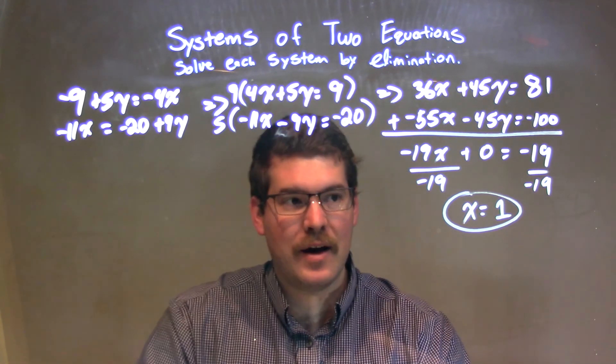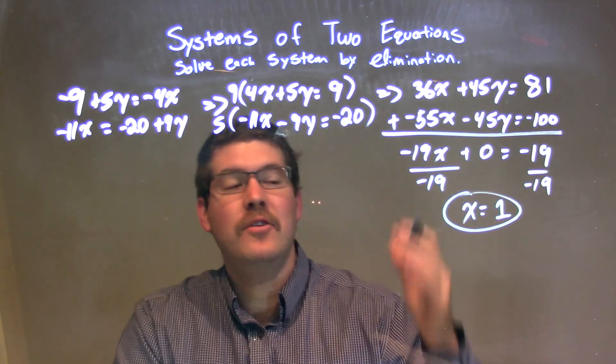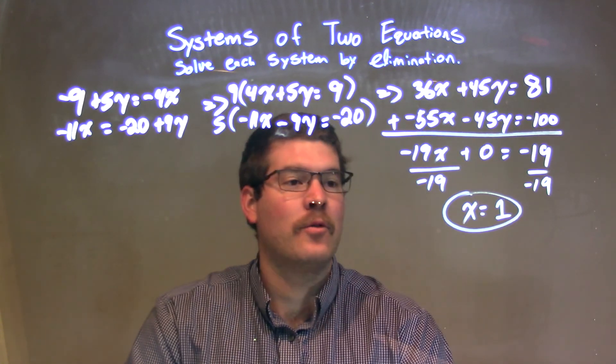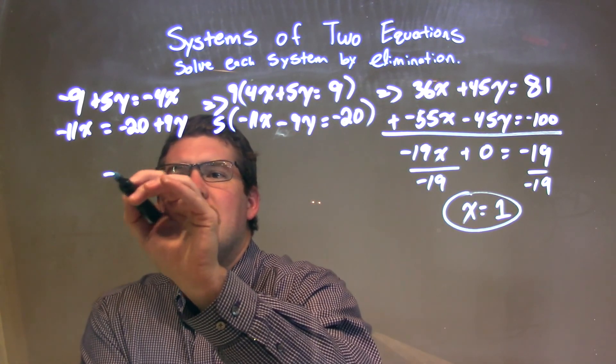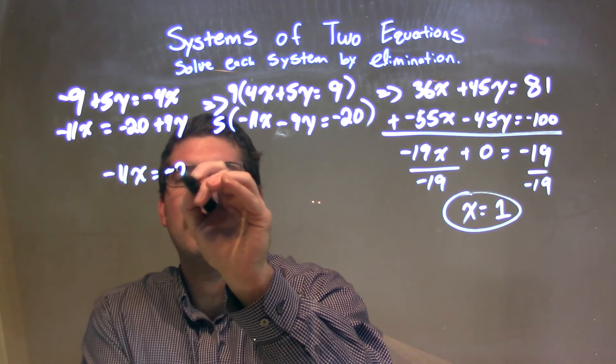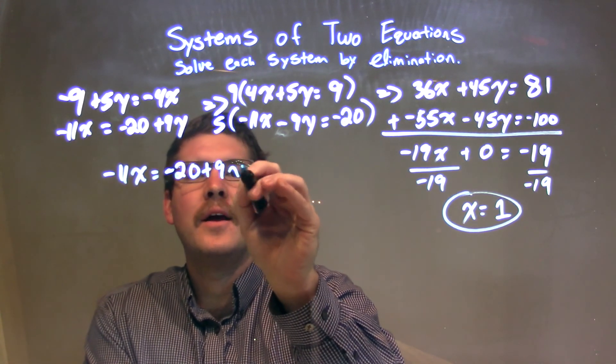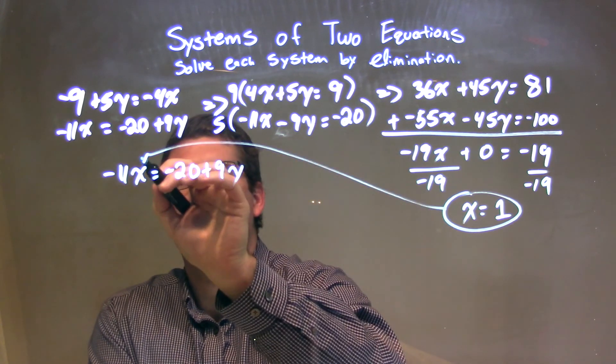But we need to find our y value. So what we're going to do is take one of the equations and plug x to be 1 and solve for y. Let's go with our second equation here. Negative 11x equals negative 20 plus 9y. Let's plug in 1 for x.